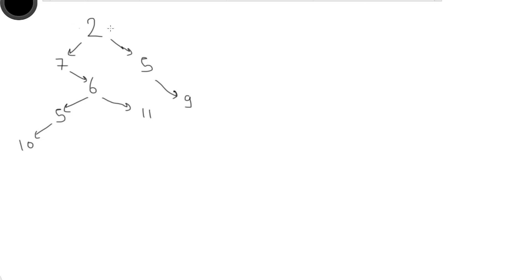So we have a binary tree and we assign horizontal levels to each node. The root is at level 0. When we go left we assign level minus 1, and minus 2 further left. When we go right from 0 we assign level 1, and going right again stays at 1. So nodes get levels: 0, minus 1, minus 2, 1, and so on.